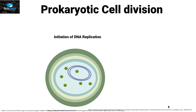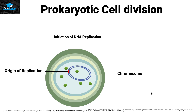In prokaryotic cell division, or binary fission, the first step is the initiation of DNA replication. Inside this single cellular organism, the DNA in prokaryotes is usually present in the form of a ring. On this chromosome, there is a specific site from where DNA replication is going to start, and that site is called the origin of replication.